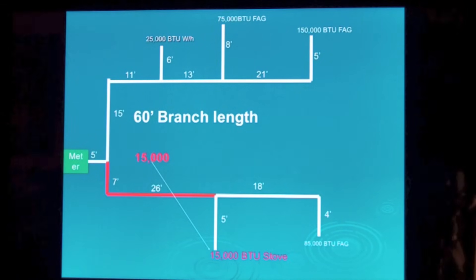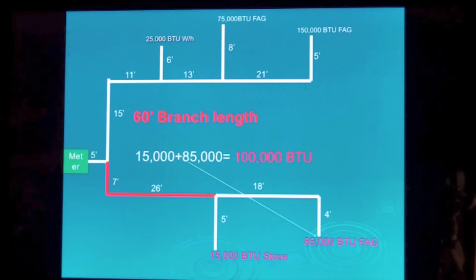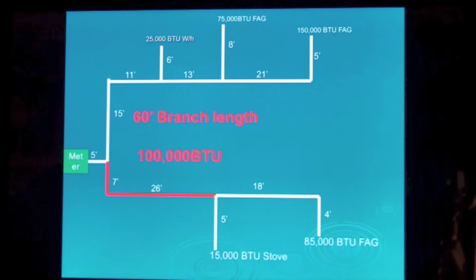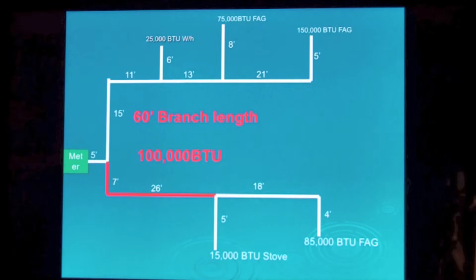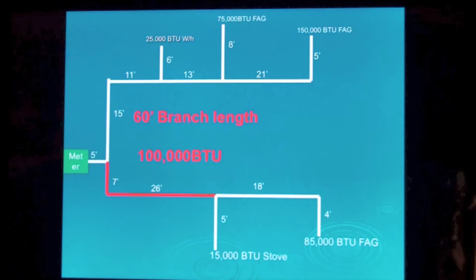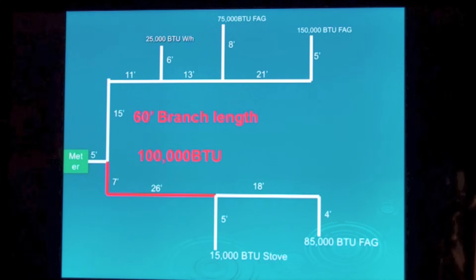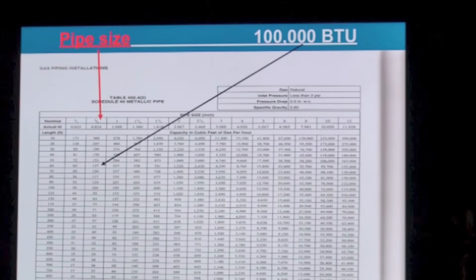15,000 BTUs, 85,000 BTUs. Because both of those have to go through here. And remember we've already sized this pipe. So we've got 100,000 BTUs have to go through this red pipe here.